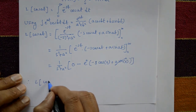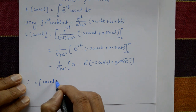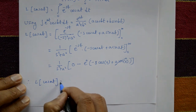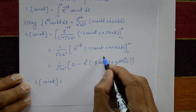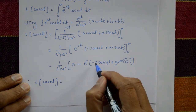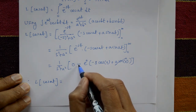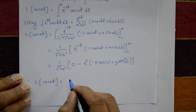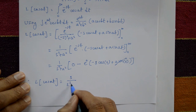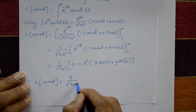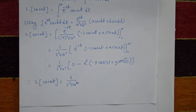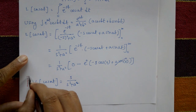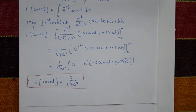Applying the limits, at infinity the exponential term vanishes, and at 0: cos(0) is 1, giving minus s times 1. With the minus sign, this becomes s upon s² + a². Therefore, the Laplace transform of cos(at) is equal to s/(s² + a²). This is the standard formula of the Laplace transform.